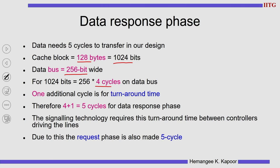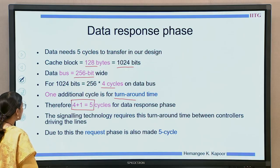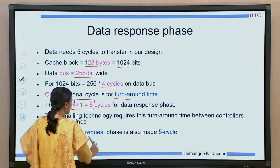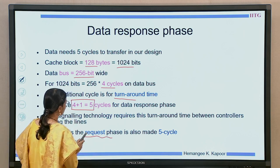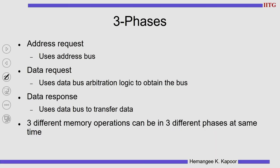When we send these 4 cycles, the 5th cycle cannot immediately be used for the next data — it has to be left vacant as a turnaround time. The technology requires a single cycle turnaround time. Hence, we are going to need 4 cycles for data transfer and 1 for turnaround, making it 5 cycles for a data response. Because the response is taking 5 cycles, we have to make sure the request also fits in 5, so that if everything takes the same time, we can have a pipelined behavior. We will see this as an example in detail.